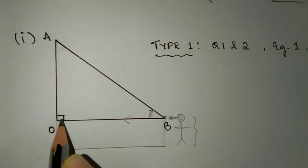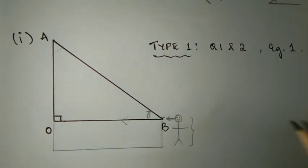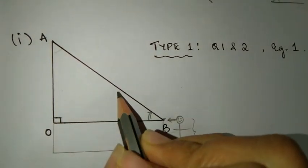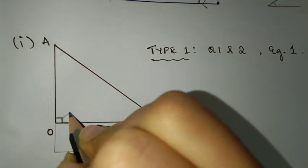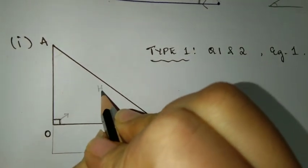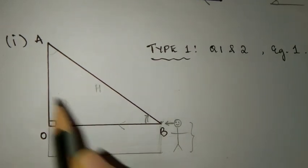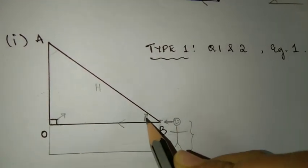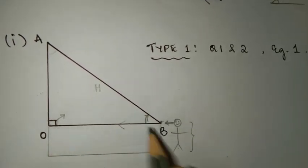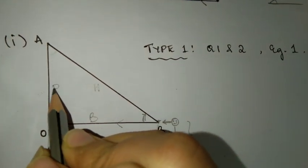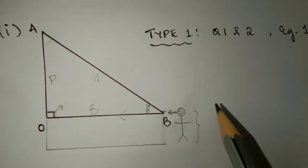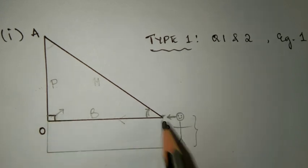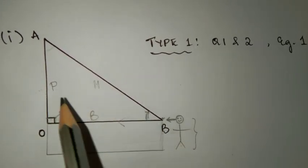One more thing: if you look at the triangle, we already know that there are three names for the sides — hypotenuse, base, and perpendicular. The side which is right opposite to 90 degrees will be hypotenuse. The side which has two angles — the given angle and the 90-degree angle — will be base, and the remaining side is perpendicular. For angle of elevation, base will be the ground.